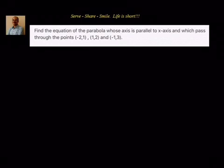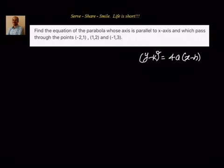Hello friends, welcome back. In this session we'll see how to find the equation of a parabola whose axis is parallel to the x-axis and which is passing through three different points. Since the axis is parallel to the x-axis, the general equation of the parabola is x equal to ly squared plus my plus n.